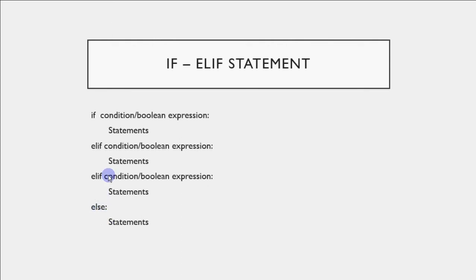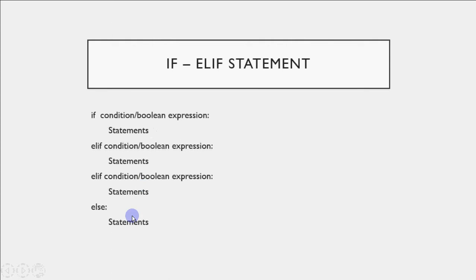If I have this else and none of the conditions is true, whatever you have written in the else block will be executed. But in case I don't have an else and none of these conditions is true, nothing will be executed in your program because none of the conditions match. So whenever you want something to be executed if all conditions are false, you can give else with the elif statement as well.